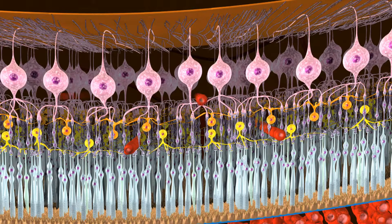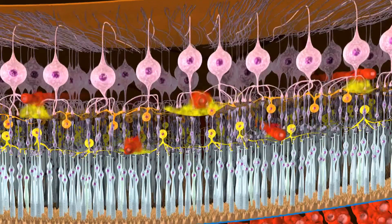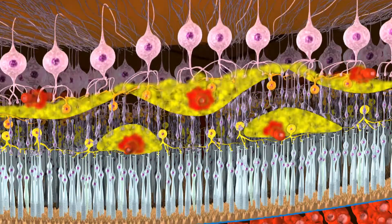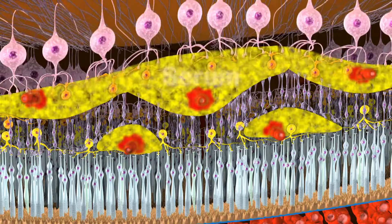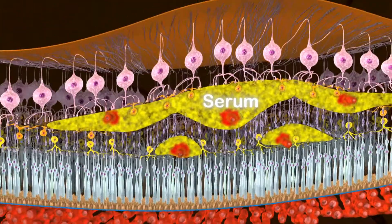As can be seen in cross-section, the serum exuding from the vein, containing small proteins and lipids, can seep into the retina, reducing and distorting vision.